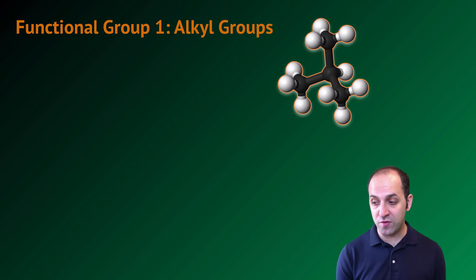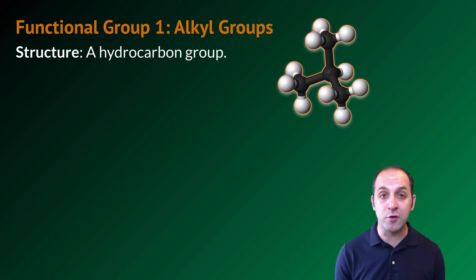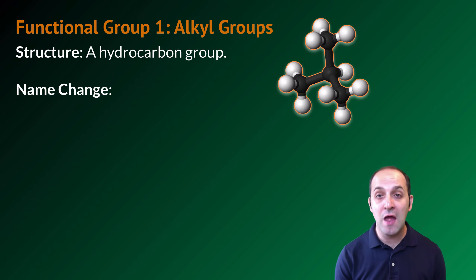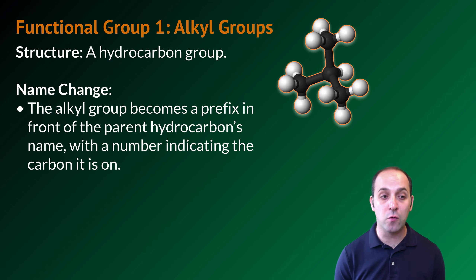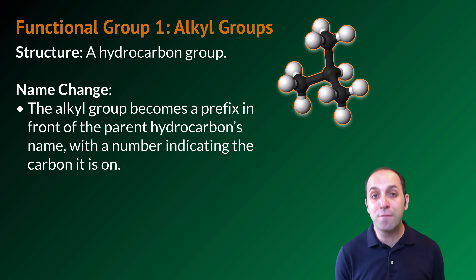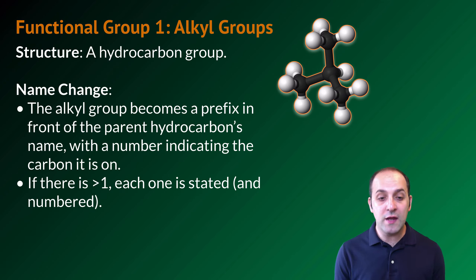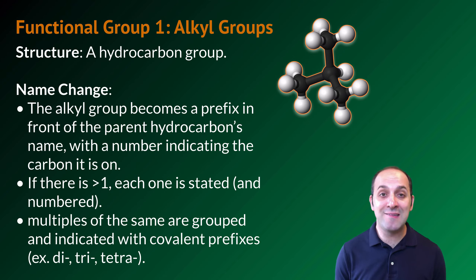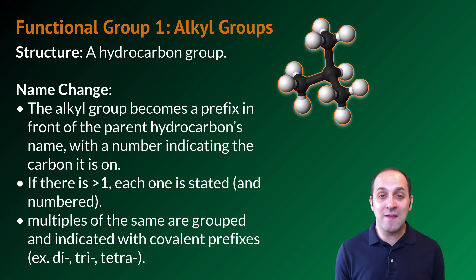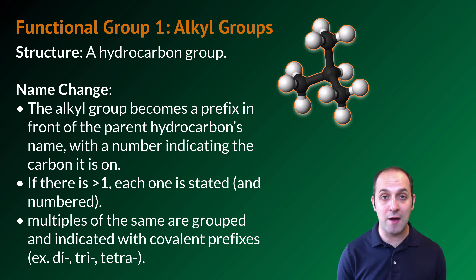Our first functional group are the alkyl groups. The structure of an alkyl group is simply a hydrocarbon group that's been added to a parent hydrocarbon. As a result of that addition, we're going to change the name of the molecule. The alkyl group is going to become a prefix in front of the parent hydrocarbon's name, and we're going to use a number to indicate the carbon that that alkyl group is on. If there's more than one alkyl group in a molecule, each one has to be stated in the name and each one's location has to be numerically identified. If we have multiples of the same alkyl group, we would group them together using covalent prefixes — not the organic prefixes from our last lesson.